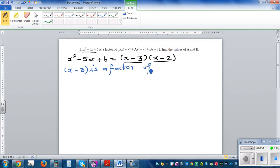x minus 3 is a factor of p(x), which implies p(3) is going to be zero.